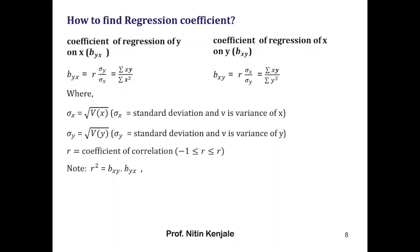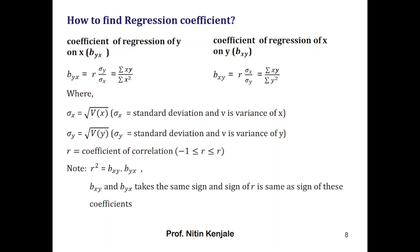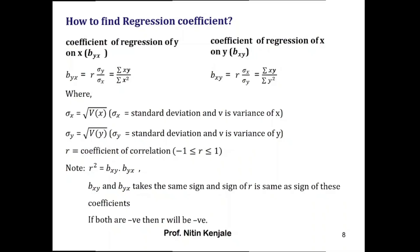Note that r squared equals bxy times byx — that is, the product of the two regression coefficients. Also note that bxy and byx always take the same sign, and the sign of r is the same as the sign of these two coefficients; if both bxy and byx are negative, then r is also negative. Also note that r takes values from minus 1 to 1.